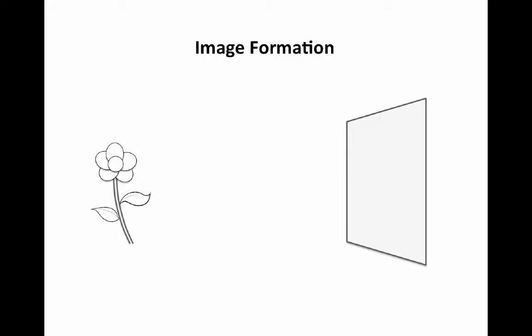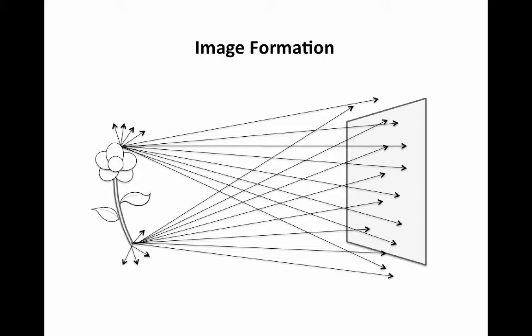Firstly, let's look at how images are formed. In the diagram on screen we have an object — a flower — and in the background we have a screen or a wall. Under normal lighting circumstances, light illuminates our subject and rays of reflected light radiate from that specimen in all different directions. This doesn't actually form an image. What we really need to form the image is to isolate those rays so we get a single ray from each point.